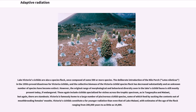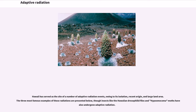Hawaii has served as the site of a number of adaptive radiation events, owing to its isolation, recent origin, and large land area. The three most famous examples of these radiations are presented below, though insects like the Hawaiian drosophilid flies and Hyposmocoma moths have also undergone adaptive radiation.